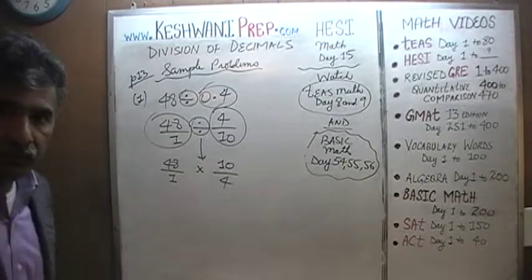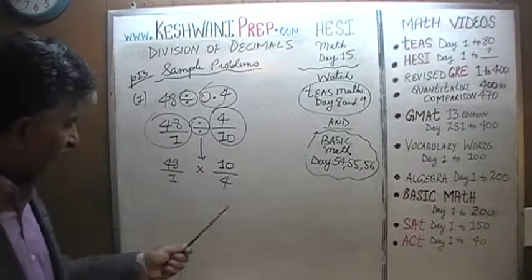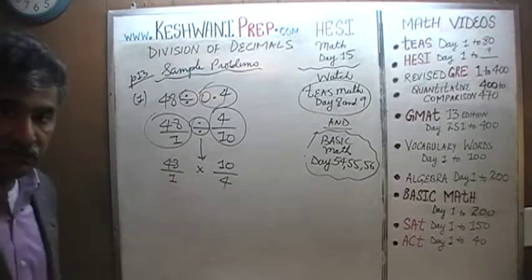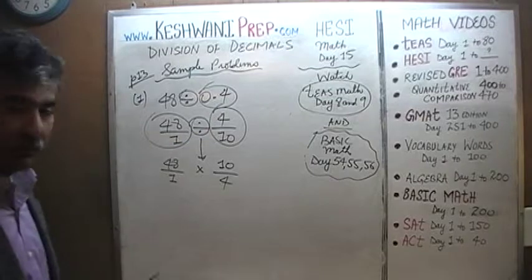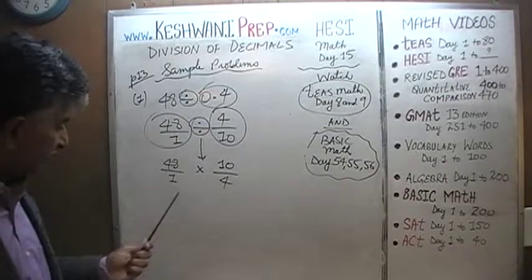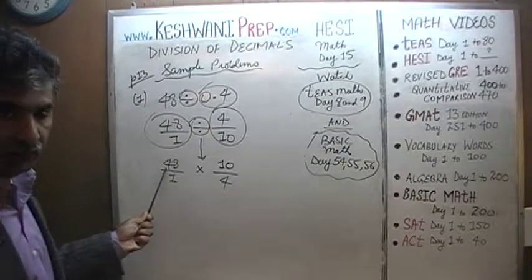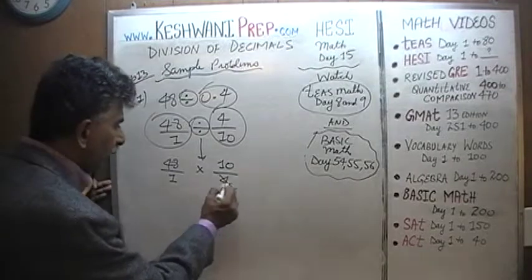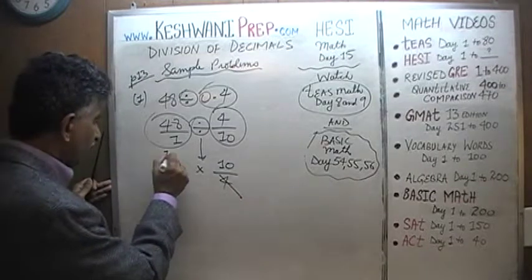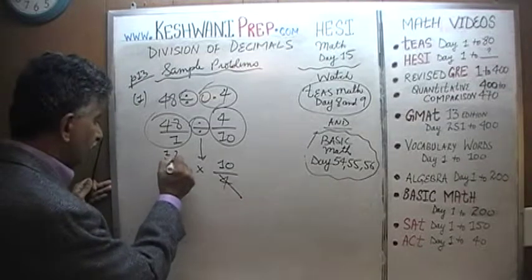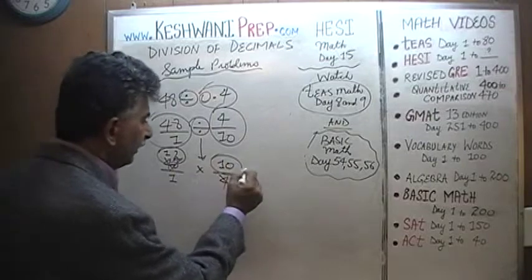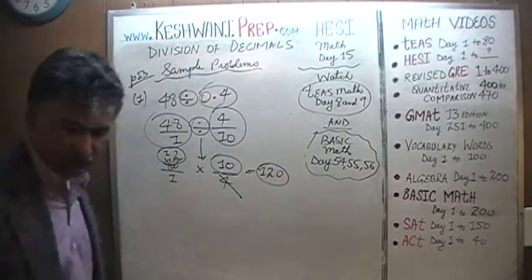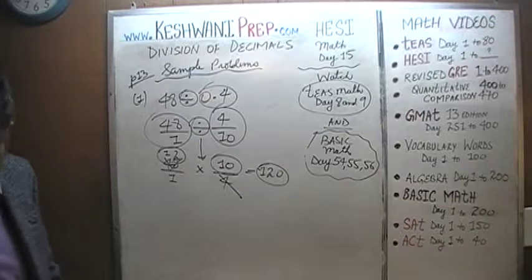All we have to do is reduce the quantity. We see 4 on the bottom and 48 on the top — 48 is divisible by 4. Divide top and bottom by 4: 4 goes away and 48 becomes 12. So it's 12 times 10, which is 120. That is our answer.